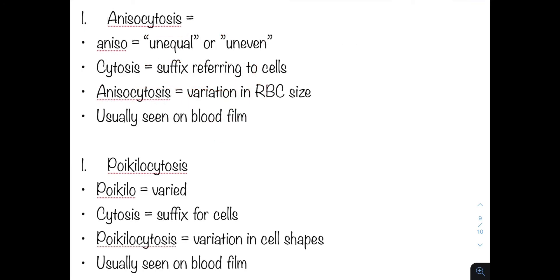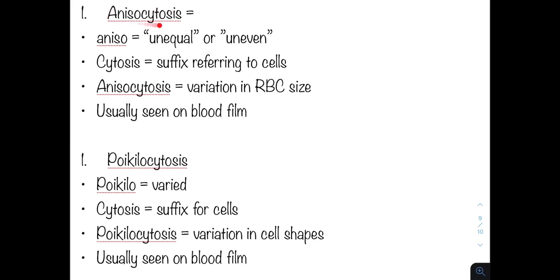Before we move on to anemia, let us define two important terms. These are anisocytosis and poikilocytosis. These terms are used to describe red cell morphology seen on blood film.